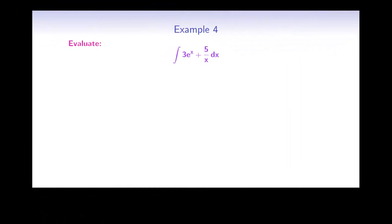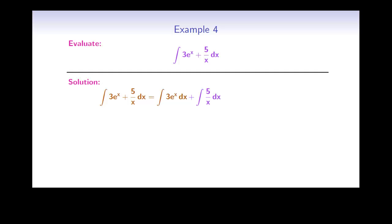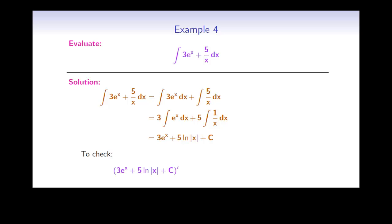Here is another example: the integral of 3e to the power of x plus 5 over x dx. First, notice this is not a power function because there is an x in the exponent, so we cannot use the power rule. We divide it into two integrals and integrate each separately. The integral of e to the power of x equals e to the power of x, and the integral of 1 over x equals ln of the absolute value of x. Add plus C. We can check our work by differentiating using the differentiation rules to get back to our original function.